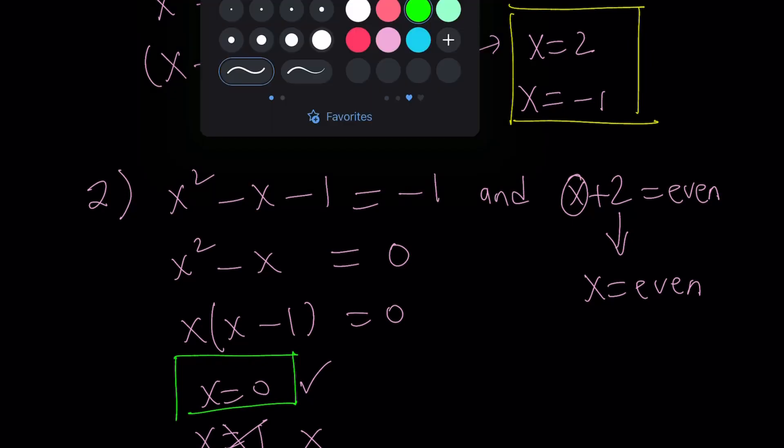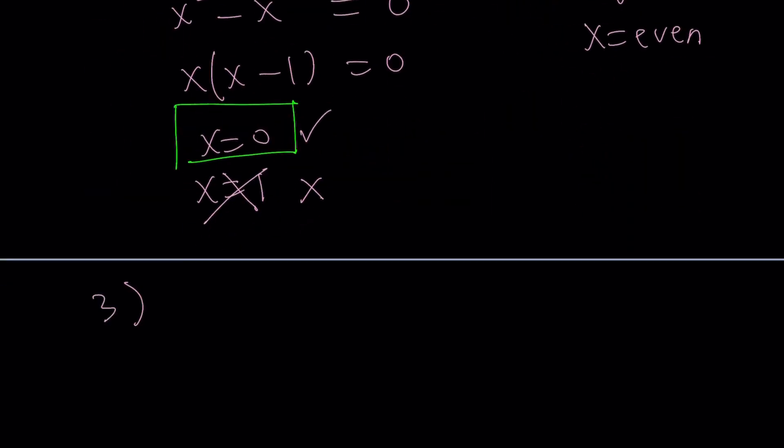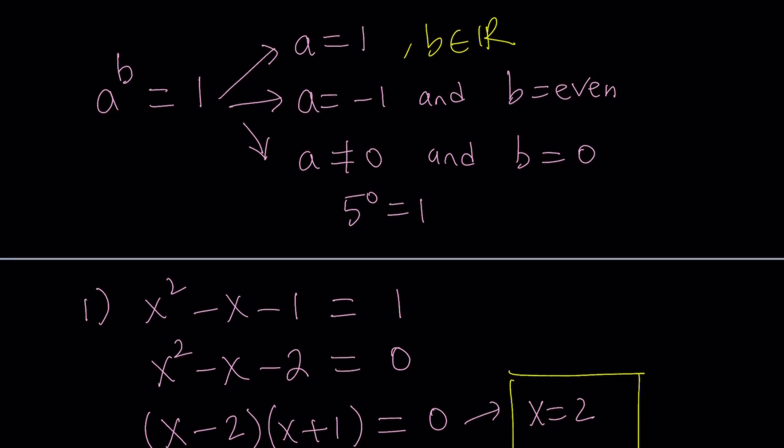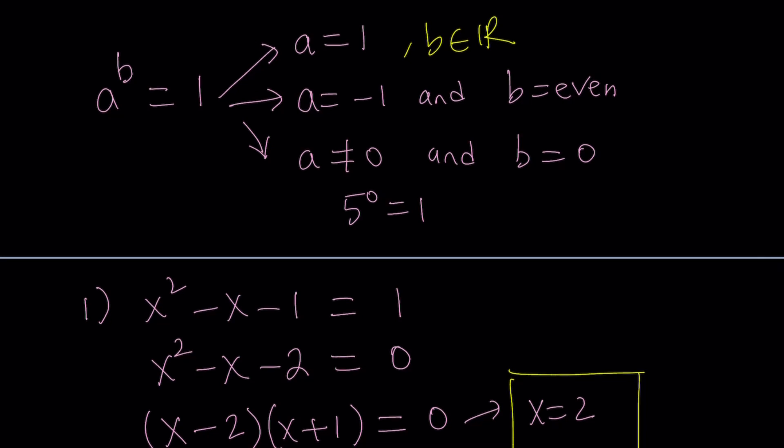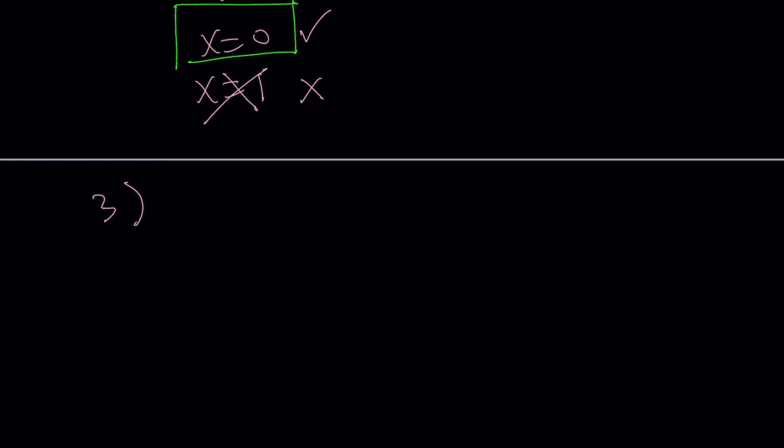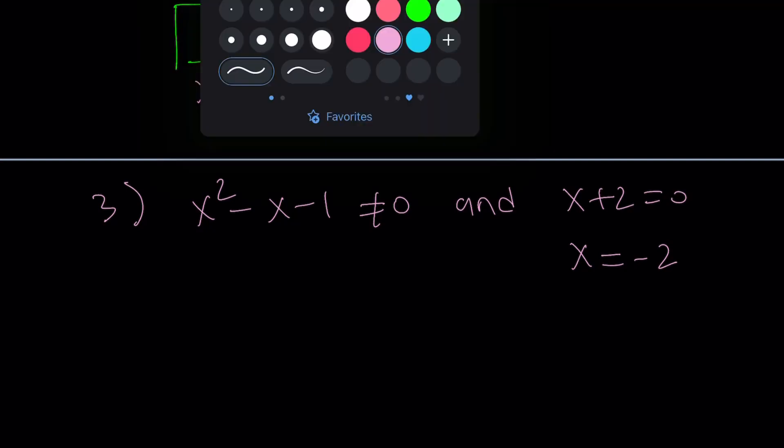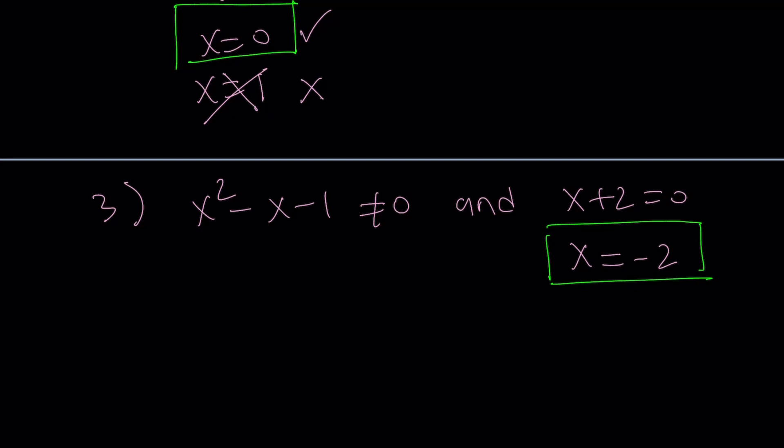So we're going to look at case number 3 now. Case number 3. Let's remember what it was. It was the base not being 0, but the exponent being 0. So we have x squared minus x minus 1 does not equal 0, and x plus 2 equals 0. So you don't have to worry too much about the first condition, because the second one is easier to check. So we get x equals negative 2 from here. So that seems to be a solution. So let's go ahead and frame it. x equals negative 2 seems to be a solution, but it needs to check here.